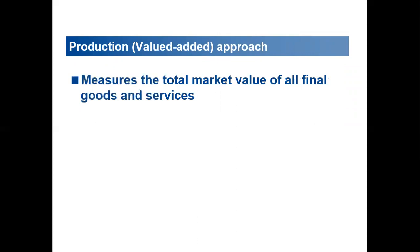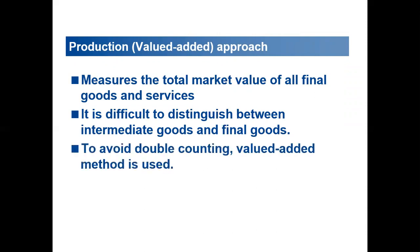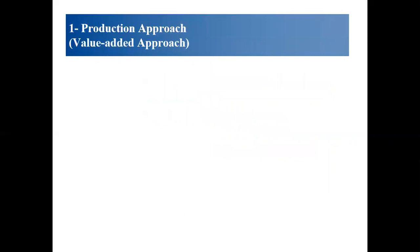Let's start with the output approach — measuring the total market value of all final goods and services. It is very difficult to calculate GDP if we include intermediate goods, so we focus on final goods to avoid double counting. The value added method gives us accurate results without double counting. The value added approach is sales minus cost.